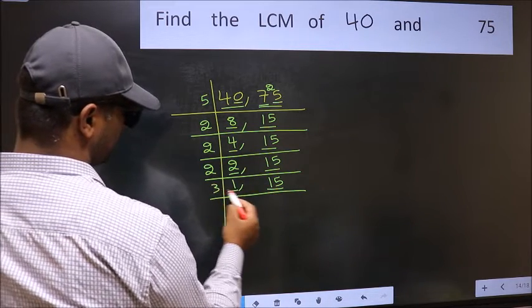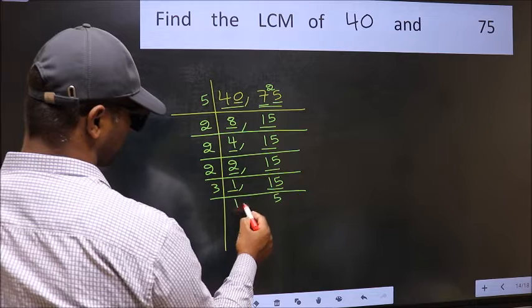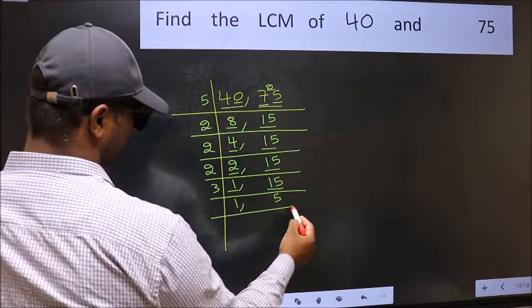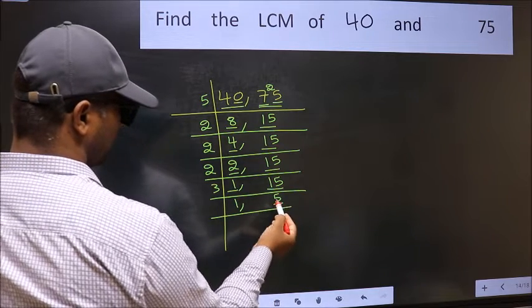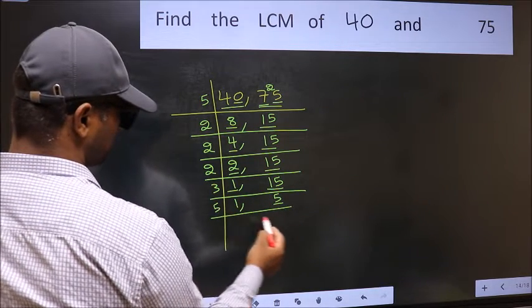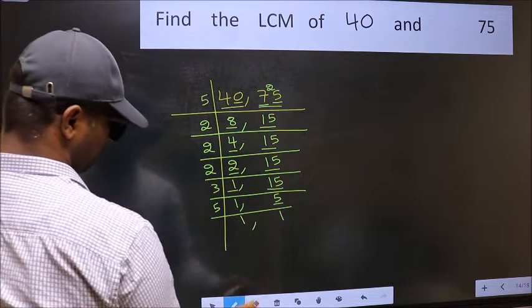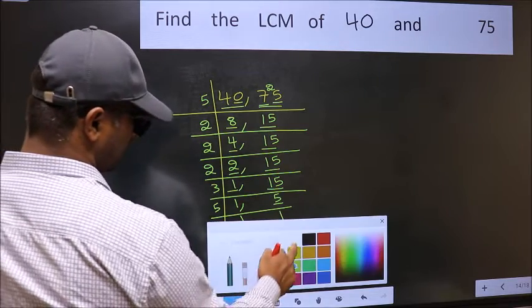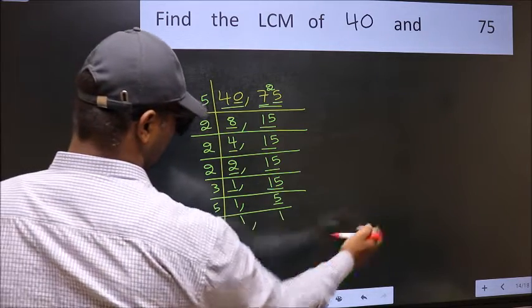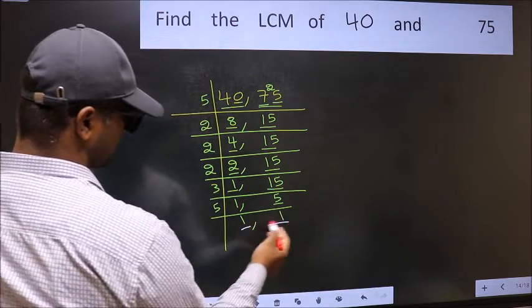15: 3 times 5 is 15. Now here we have 5. 5 is a prime number, so 5 times 1 is 5. We got 1 in both places.